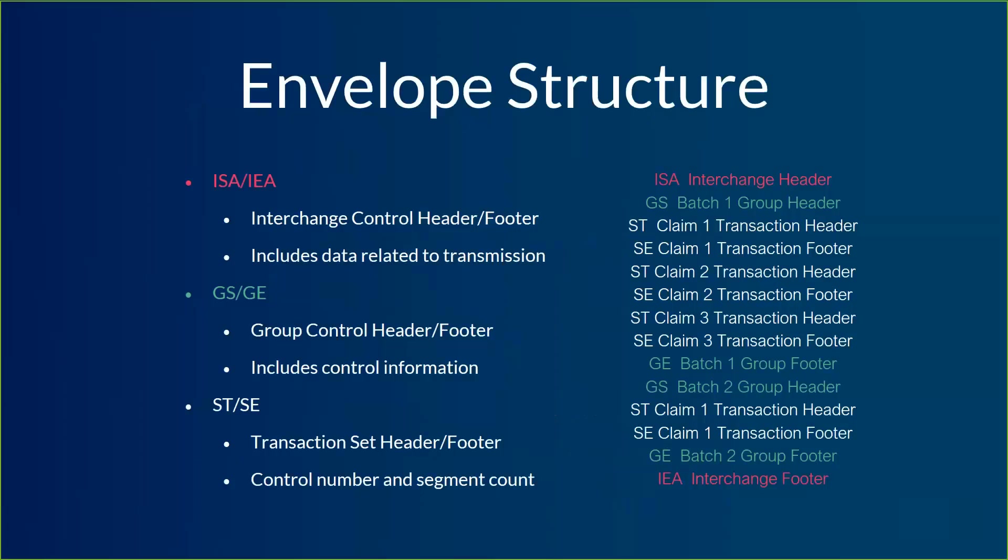The ISA/IEA will have information about who the sender is, who the receiver is, a date timestamp, a tracking number — basically how does it get from point A to point B. The next one is GS to GE, the group control header and footer. This one operates at a group level, usually batch level information. There can be more than one group in each ISA to IEA section. In this example I have two batches, and each batch is surrounded with a GS at the top and a GE at the bottom. This section will also have sender, receiver, a version number, and a tracking number for that particular group.